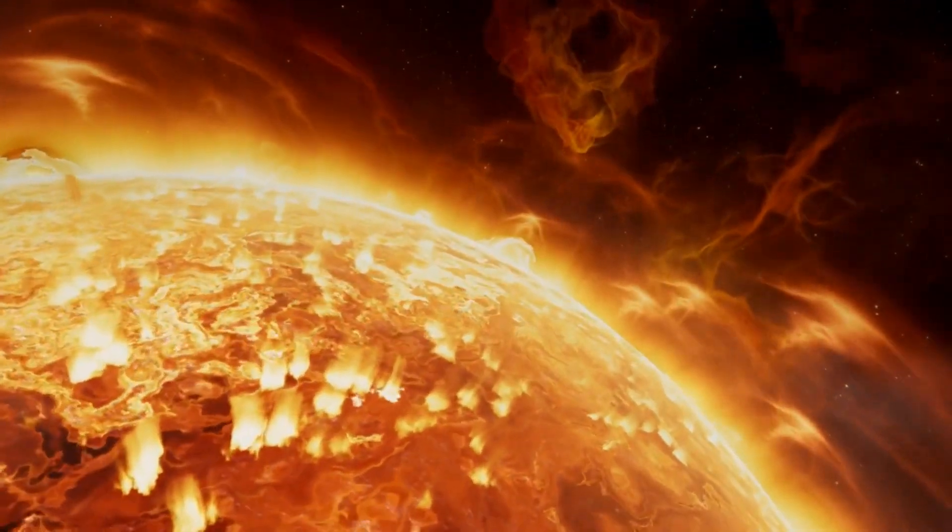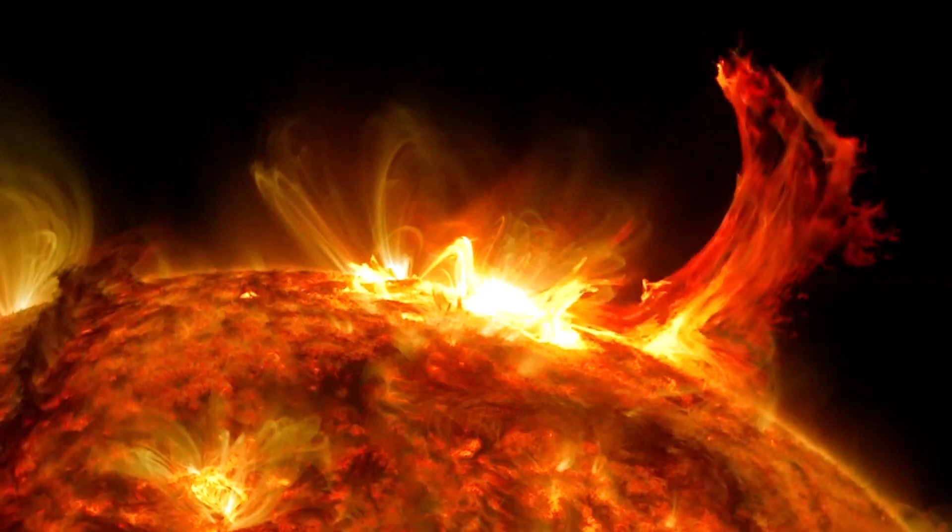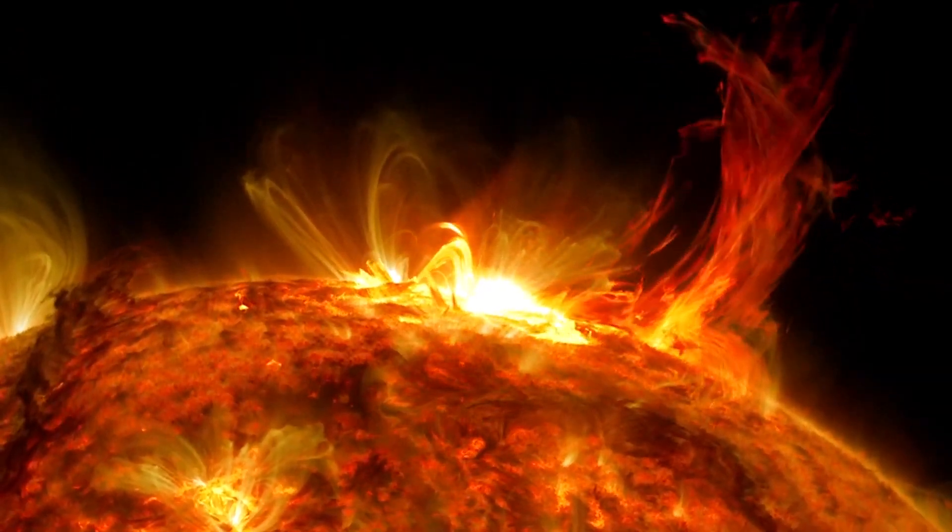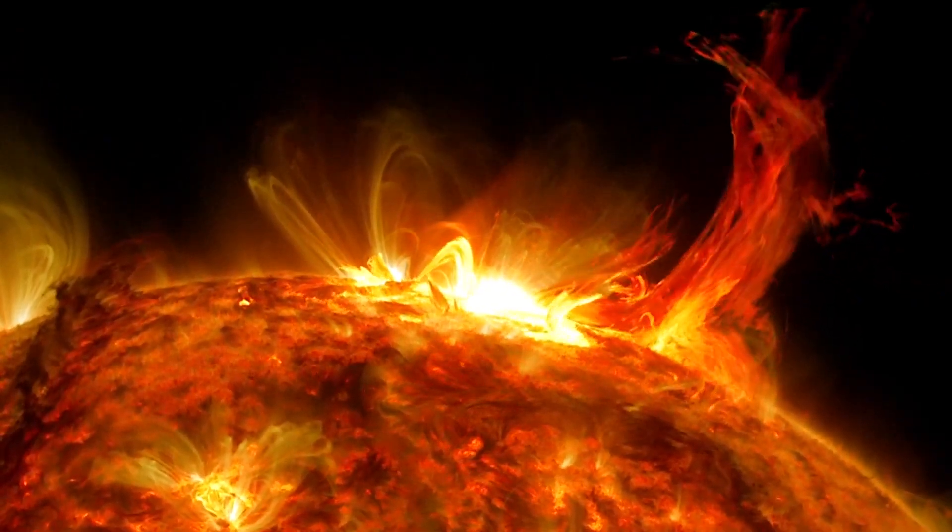In 2012, Earth narrowly missed another major solar storm. A coronal mass ejection erupted from the sun and, had it been directed toward Earth, it could have caused catastrophic damage.